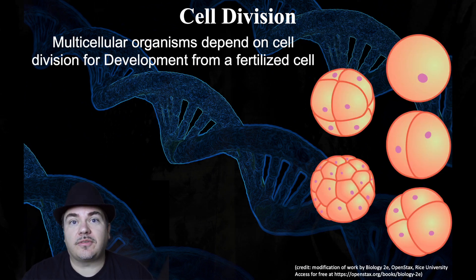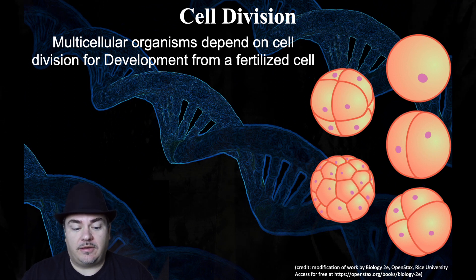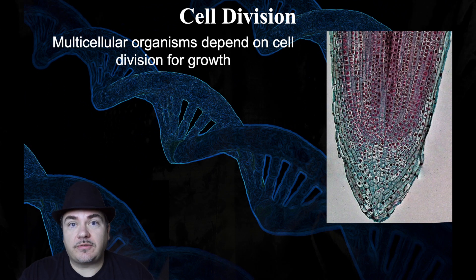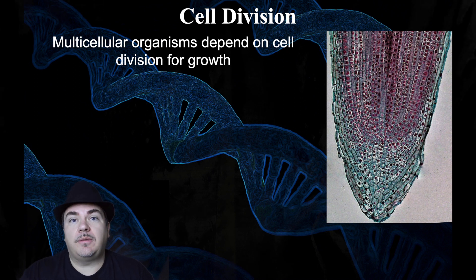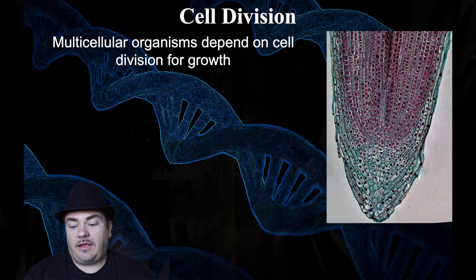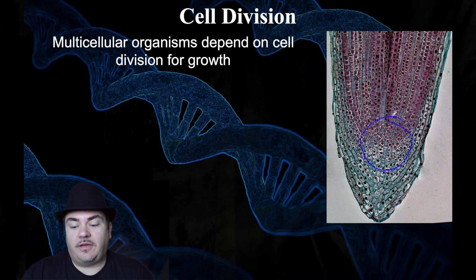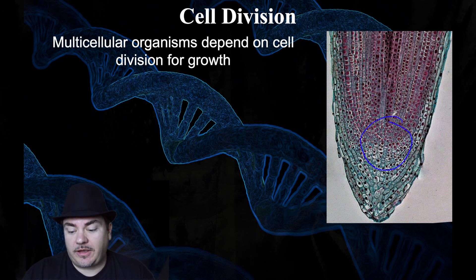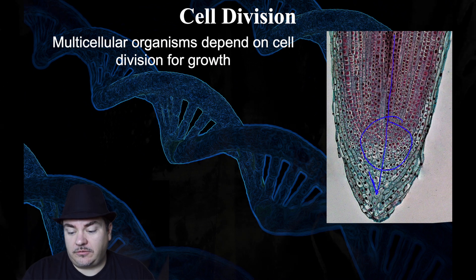Now, multicellular organisms, things like us, use cell division for development from a fertilized cell. Another thing we use cell division for is growth. For example, this is the root tip of an onion. Plant roots need to be able to grow longer, and how they grow longer is near the tip of the roots, there's a region where the cells are constantly going through cell division. They just keep dividing over and over, and by dividing, this root is growing longer.